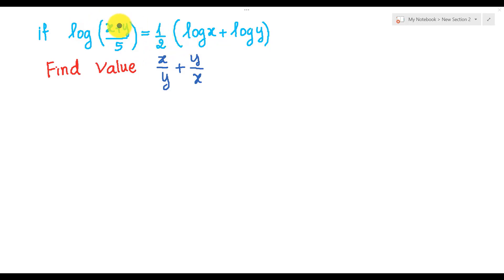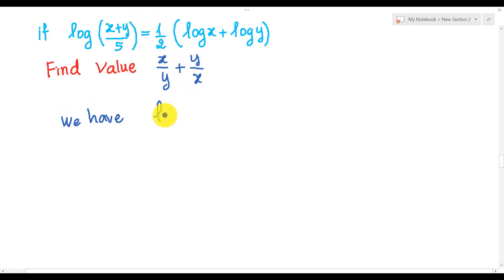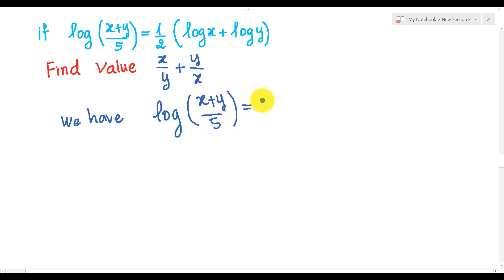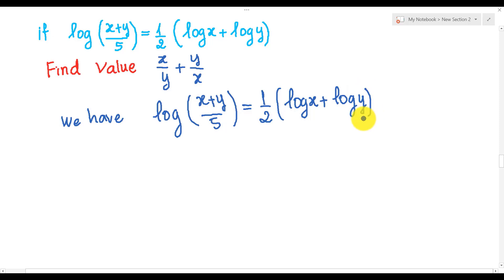We have the expression, so we need to find the value of this expression. On the right-hand side, 1 over 2 multiplied by log h plus log y. I can use the log rule.